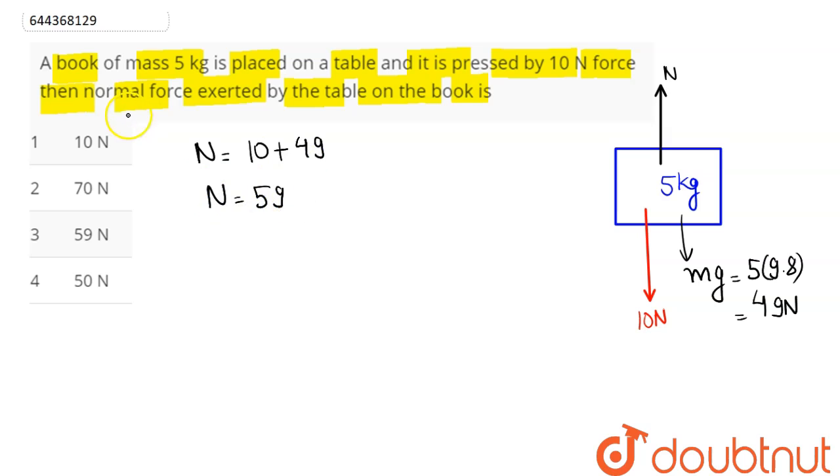Which is the normal force exerted by table on the book in upward direction. Hence we can say 59 Newton, that is option number 3 is the correct answer. So 3 is our answer.